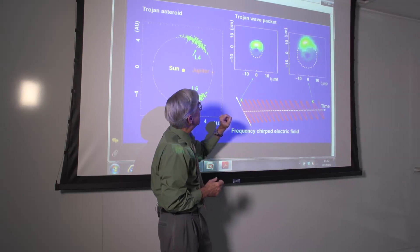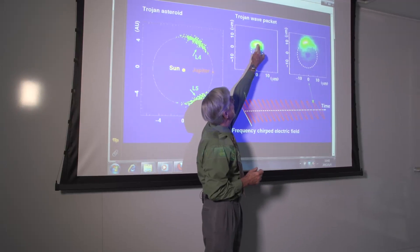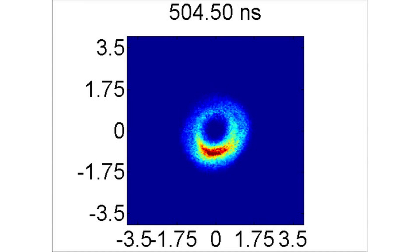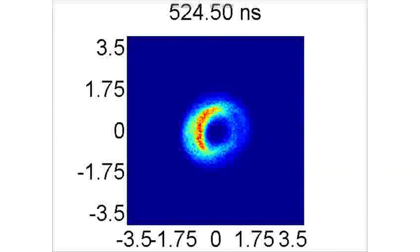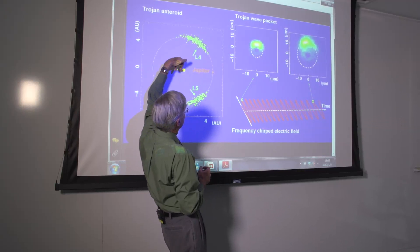Using this electric field, it's possible to create a localized electronic state that remains localized as it moves in a near circular orbit about the nucleus, much as do the Trojan asteroids around the Sun.